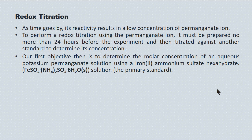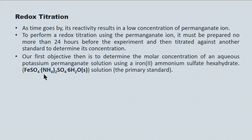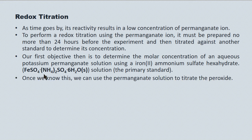Our primary standard is what's called an iron(II) standard. The full name of the iron complex is iron(II) ammonium sulfate hexahydrate. Its concentration is stable, so we prepare this material to a known concentration and then titrate it against the permanganate. Once we know the concentration of the permanganate, we can determine the concentration of the peroxide.